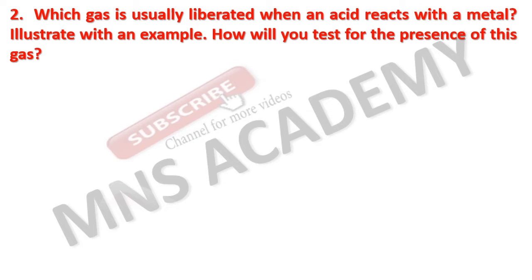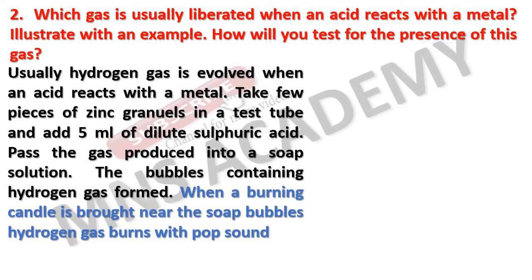Which gas is usually liberated when an acid reacts with a metal? Illustrate with an example. How will you test for the presence of this gas? Usually hydrogen gas is evolved when an acid reacts with a metal. Take a few pieces of zinc granules in a test tube and add 5 ml of dilute sulphuric acid. Pass the gas produced into a soap solution. Bubbles containing hydrogen gas are formed. When a burning candle is brought near the soap bubbles, hydrogen gas burns with a pop sound.